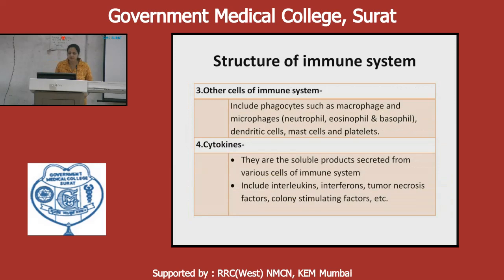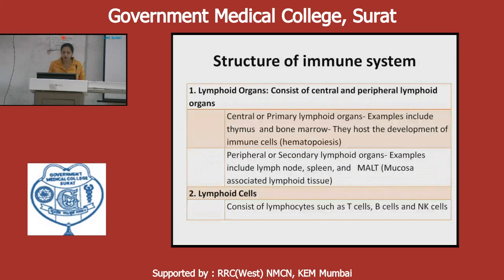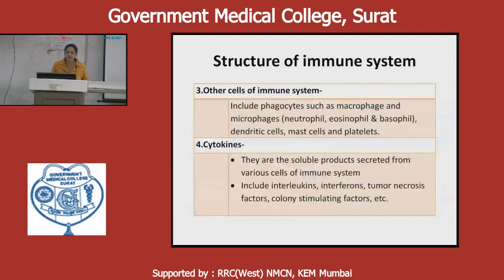Other cells of the immune system include phagocytes such as neutrophils, eosinophils, and basophils, as well as dendritic cells, mast cells, and platelets. Cytokines are soluble products secreted from various cells of the immune system. They include interleukins, interferons, tumor necrosis factors, colony stimulating factors, etc. All four components together make up the immune system: lymphoid organs, lymphoid cells, other cells of the immune system, and cytokines.